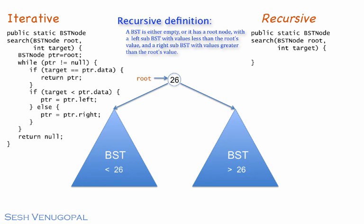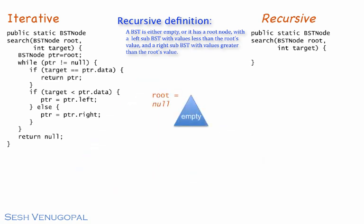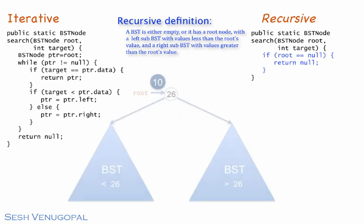The first part of the definition says the BST can be empty. In the code, this would correspond to the root being null. This happens if the initial tree itself is empty, that is, it does not have any nodes, which of course means the target was not found.